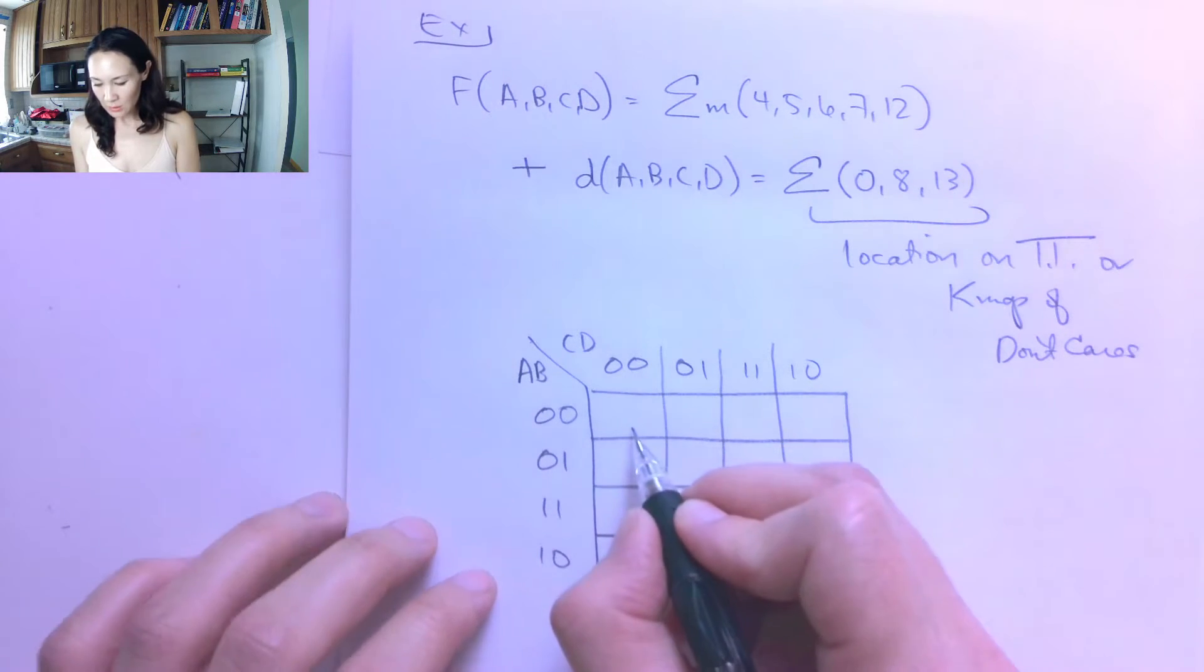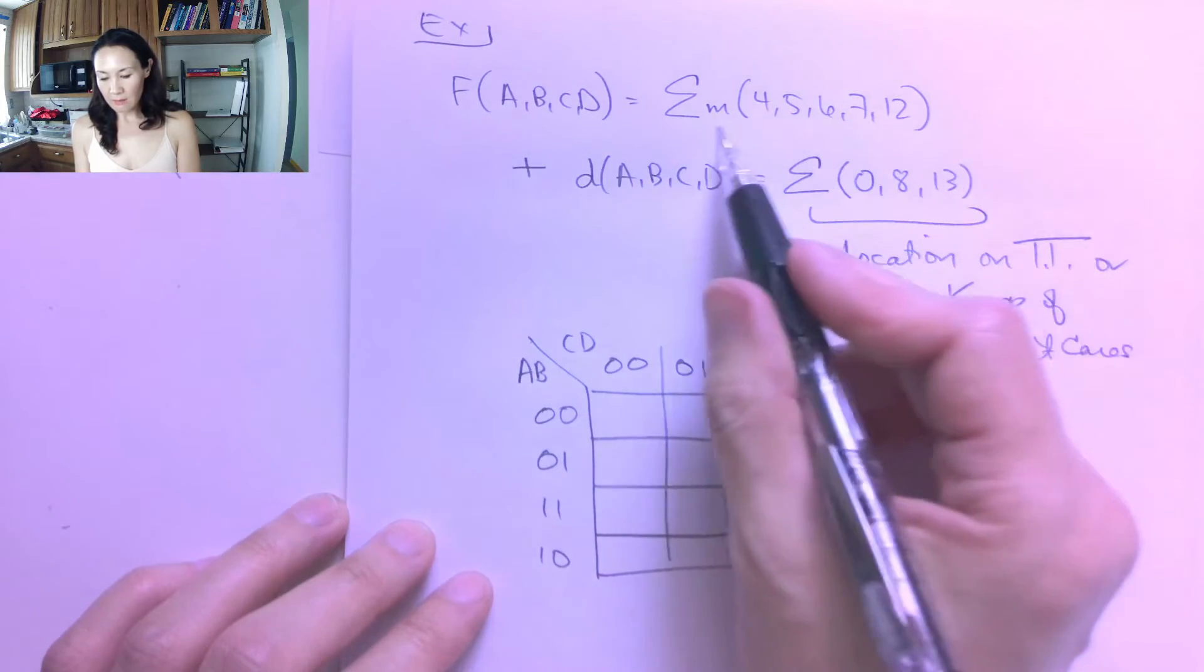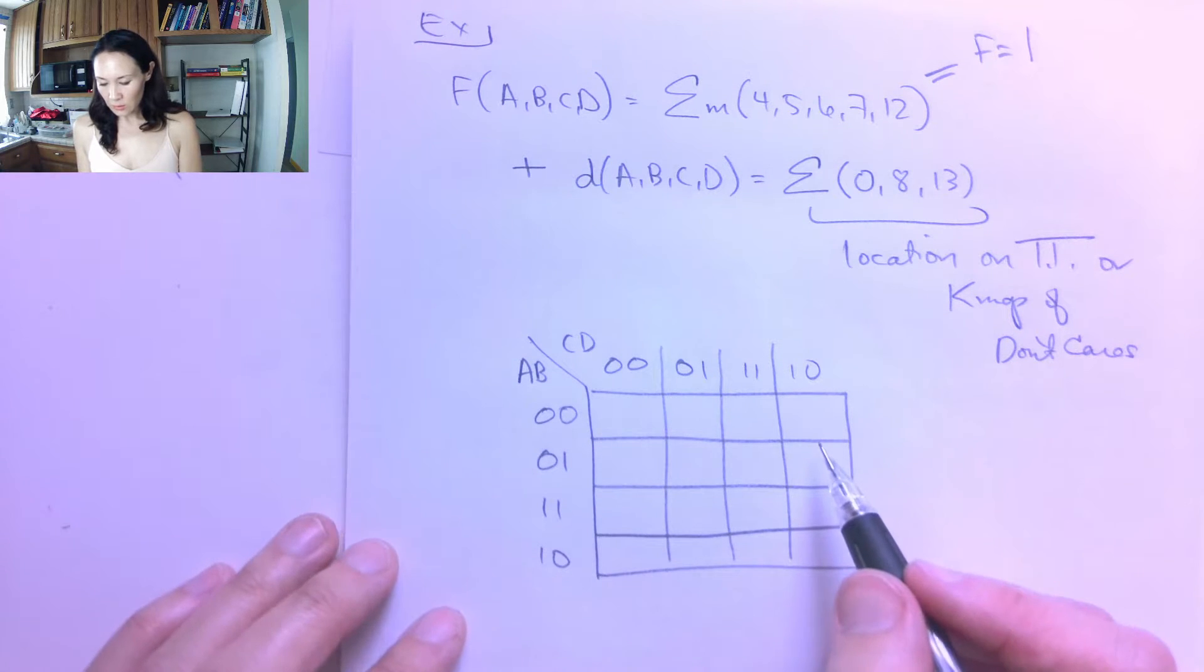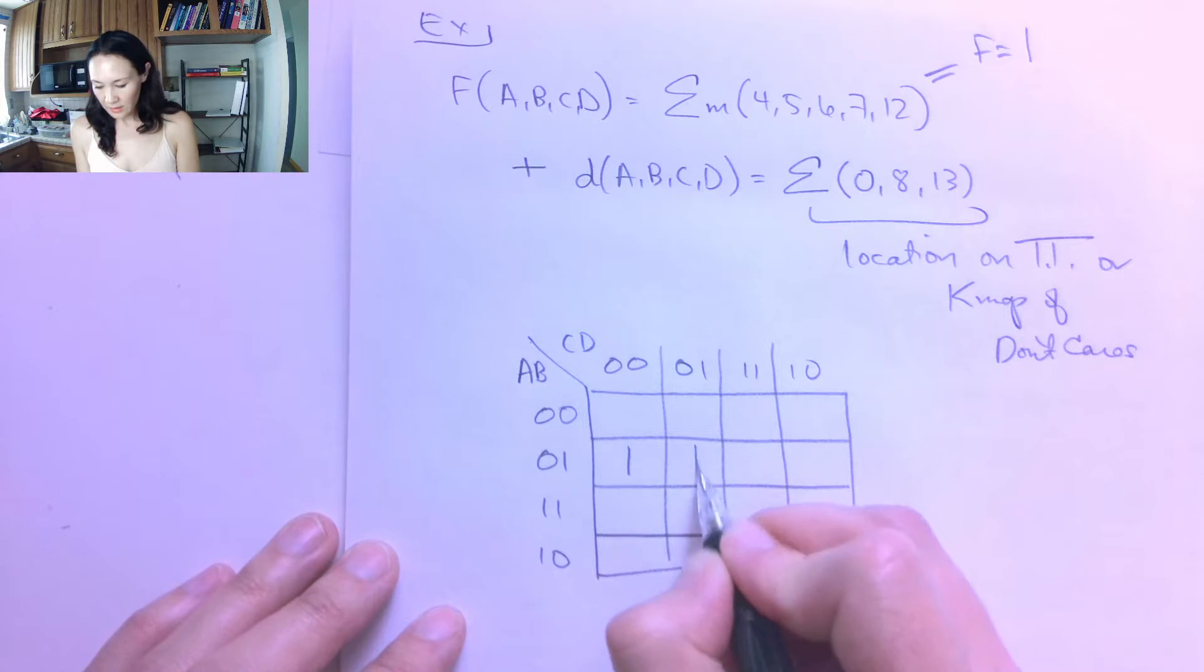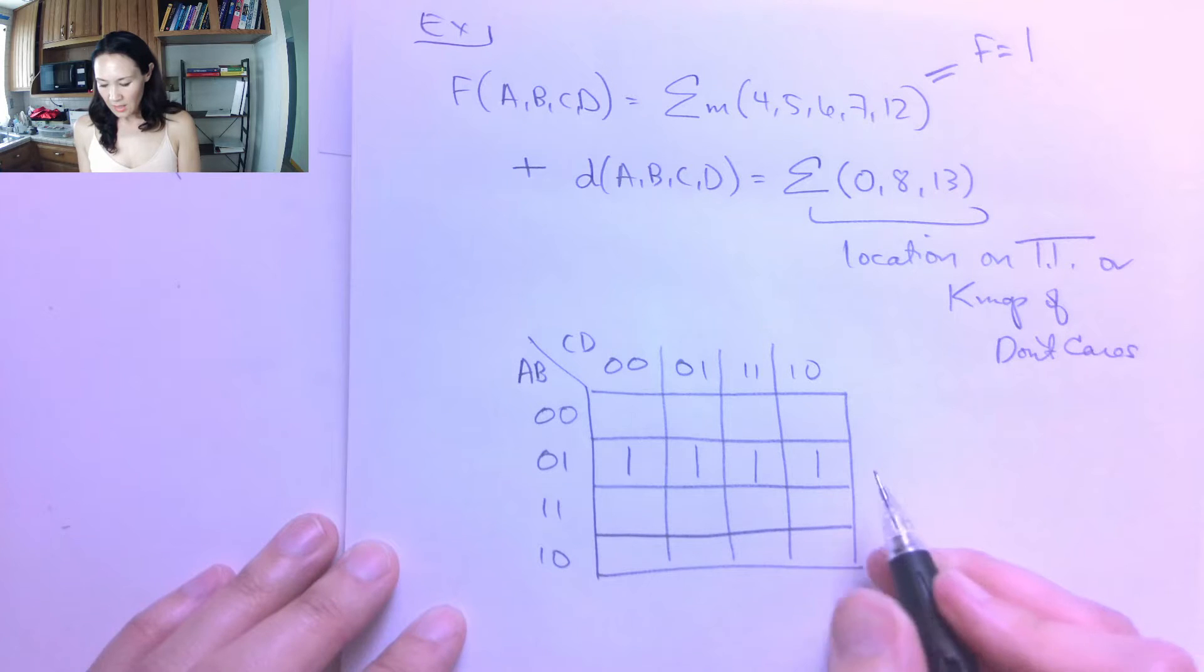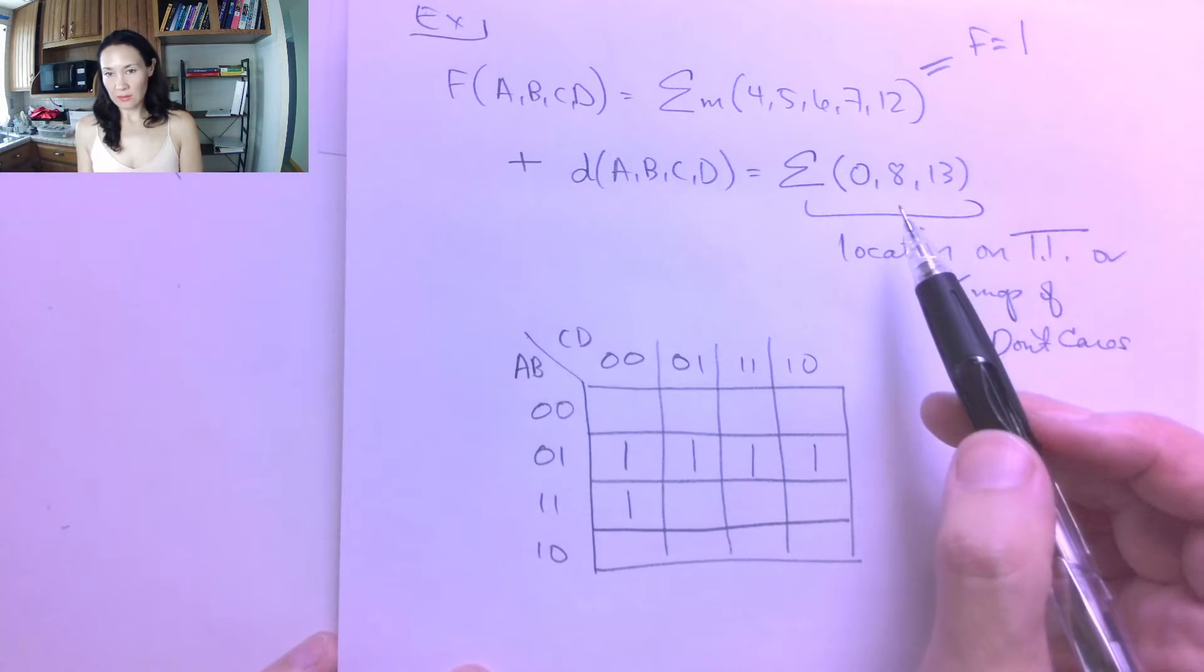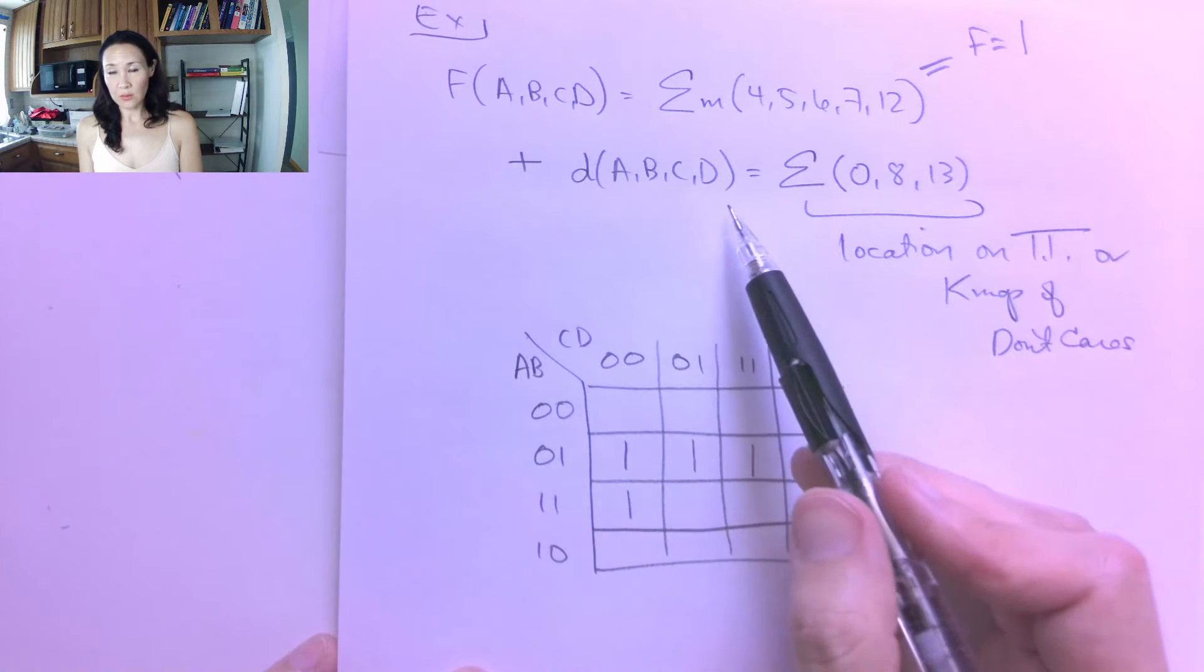So I know this is minterm 0, 1, 2, 3. I'm going to look at my list of minterms, and this is going to be where F is equal to 1. So F is going to be equal to 1 at minterm 4, that's here. 5 here. 6 here. And 7 is here. And then I have 8, 9, 10, 11, and 12 is going to be this one. So if I don't have any don't care specified, then I would assume that the rest of these are equal to 0. But I do have don't cares.